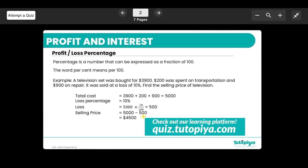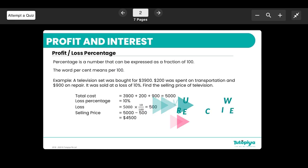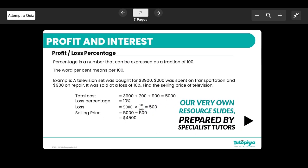Let's look at this example: a television set was bought for $3,900, $200 was spent on transportation and $900 on repair. It was sold at a loss of 10%. Find the selling price of the television. Basically, the first thing is to find out the total cost. So $3,900 was the actual buying price plus the transportation plus the repair, so all together they have spent $5,000 to buy this television.